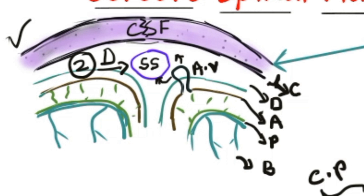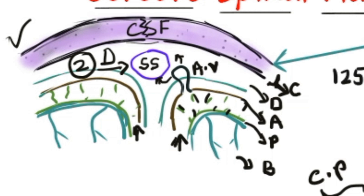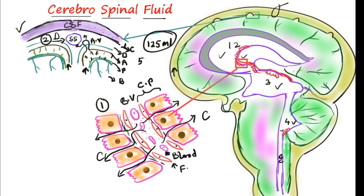Around the brain we have subarachnoid spaces. These are the trabeculae of the subarachnoid spaces, which provide a spongy cavity where CSF is filled. We usually have 120 ml of CSF altogether in the central nervous system, with a turnover of around 500 ml per day.